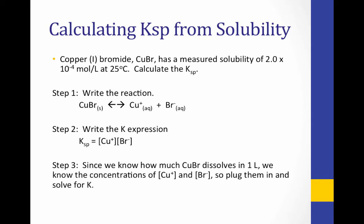Since we know how much copper bromide will dissolve in one liter, we know the concentrations of copper and bromide at equilibrium, so we can plug them in. 2.0 × 10⁻⁴ will be the concentration of each ion, because if 2.0 × 10⁻⁴ formula units of copper bromide dissolve, we get a one-to-one ratio — 2.0 × 10⁻⁴ copper ions and that same amount of bromide. Solving for KSP, we get 4.0 × 10⁻⁸. Note there are no units on our K value.